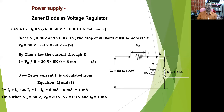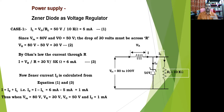When 1 milliampere of current flows through the Zener diode, the output voltage remains at 50 volts. So for Case 1: Vin = 80 V, VR = 30 V, VO = 50 V, IZ = 1 milliampere. The output voltage remains constant at 50 volts.